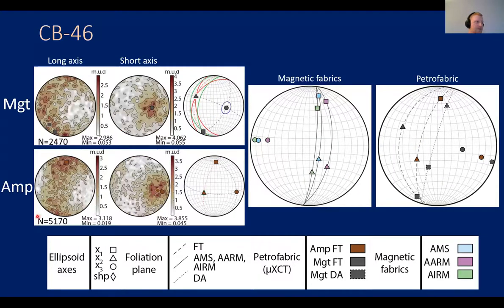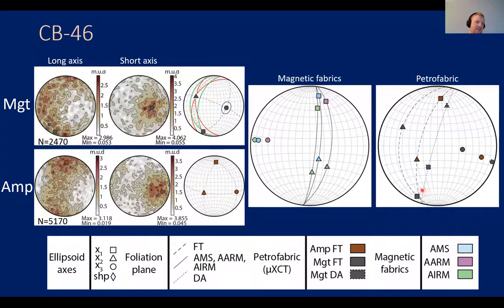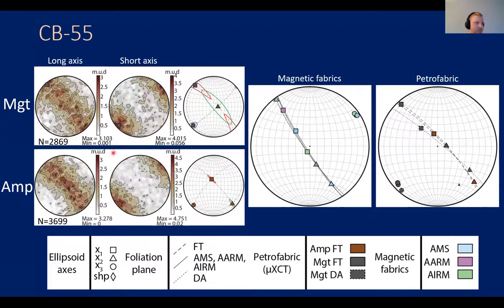In CB46 the magnetite shows an east–west, shallowly dipping girdle distribution, while amphibole shows a moderately dipping skirt distribution. The magnetic fabrics are steeply dipping in a north–south girdle distribution. Looking at the different petrofabrics — magnetite shape, amphibole shape, and magnetite distribution — the distribution fabric is the most steeply dipping, so the magnetic fabric here seems to correlate most closely with the magnetite distribution anisotropy.